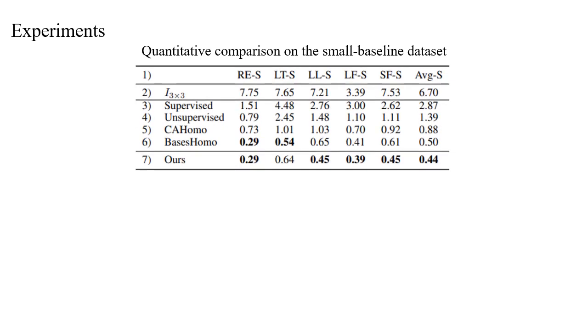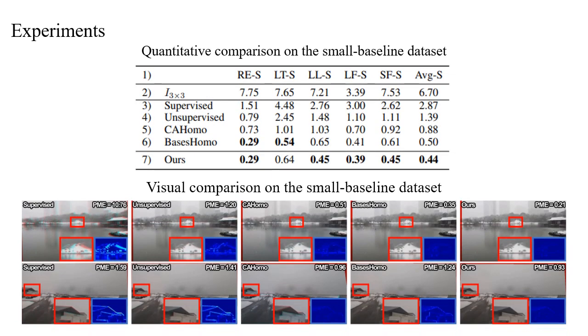Additionally, we also conduct experiments on the small baseline dataset to verify the effectiveness of our method. As we can see, our method outperforms the existing four deep learning-based methods with the error reduced from 0.50 to 0.44. Visualization examples are shown below.